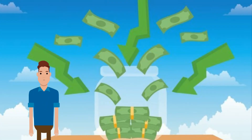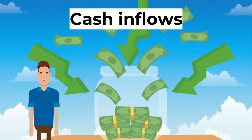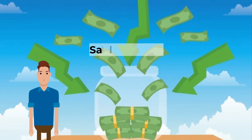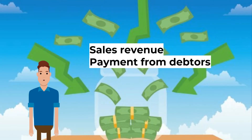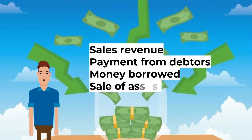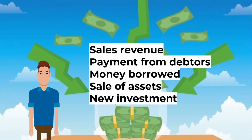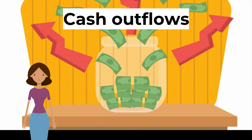The cash flow of a business is its cash inflows and cash outflows over a period of time. Cash inflows are the sums of money received by the business over a period of time — for example, sales revenue from the sale of products, payment from debtors (customers who have already purchased goods but didn't pay at that time), money borrowed from external sources like loans, money from the sale of business assets, and investors putting more money into the business.